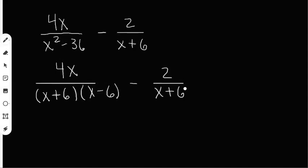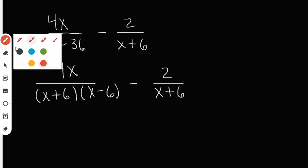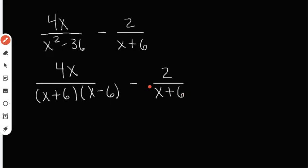And now, I want to make sure that the denominators can be the same. So what is the second fraction missing that the first fraction has? It's missing the x minus 6. They both have an x plus 6, but the second fraction is missing the x minus 6 on the bottom. So I'm going to multiply the top and the bottom of the second fraction by x minus 6.